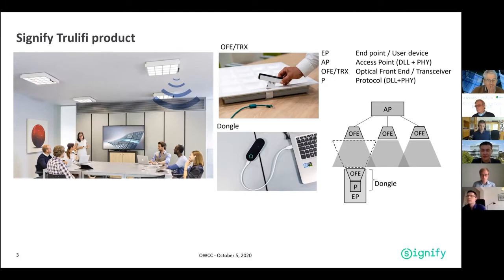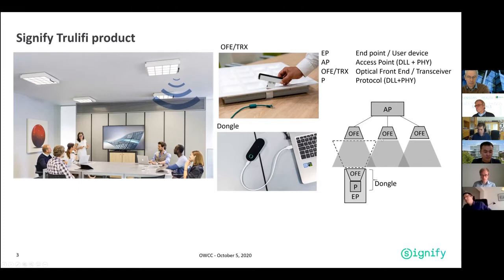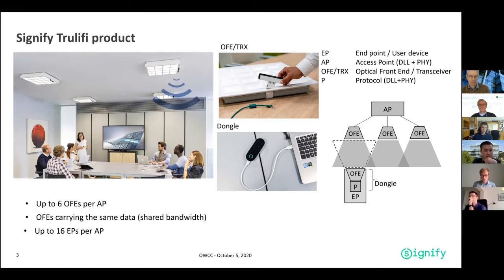So to summarize the TrueLiFi product and terminology: the access points represent the modem connected to multiple optical frontends or transceivers. The end user device — the laptop with a dongle — we call the endpoint. We can connect up to six optical frontends per access point, and all optical frontends carry the same data. Up to 16 endpoints can be connected to a single access point.